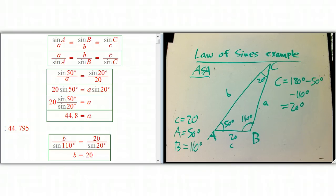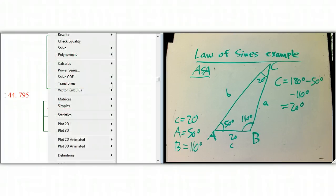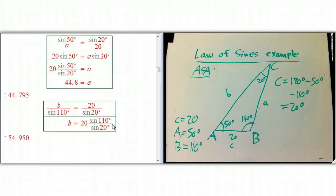So B is, again, 20 times the ratio of sines. Sine 110 degrees over sine 20 degrees. And we just evaluate it. And we're done. So that's going to be 54.95.